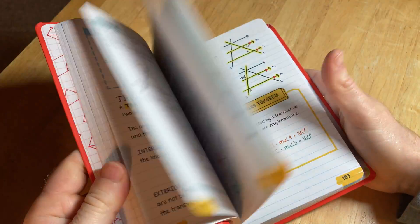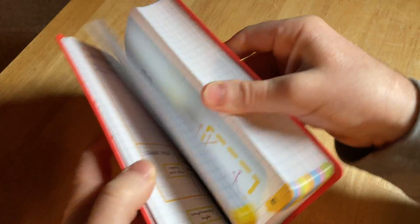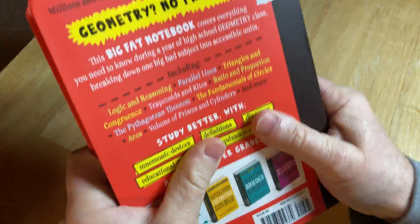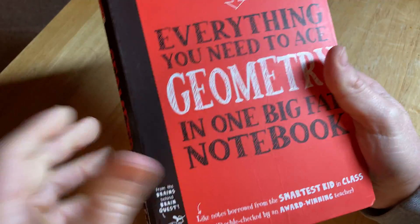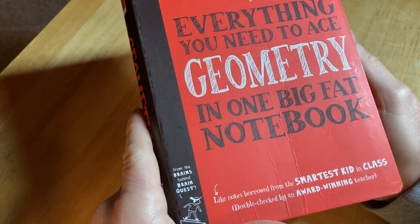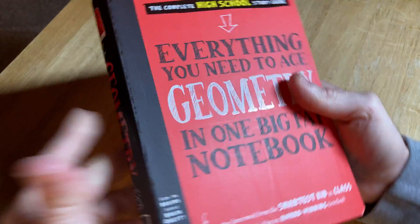So this is a really fun book that's inexpensive and widely available. It's new, it's kind of like a soft cover slash hard cover—it's a weird cover. It's called Everything You Need to Ace Geometry in One Big Fat Notebook: The Complete High School Study Guide.